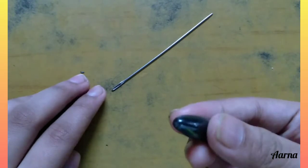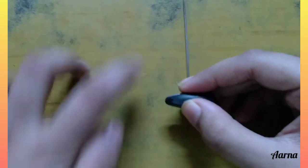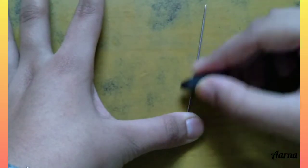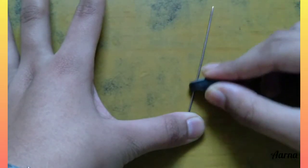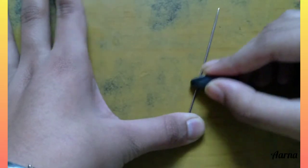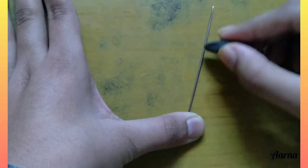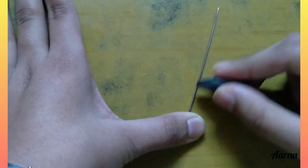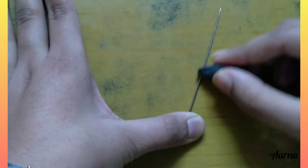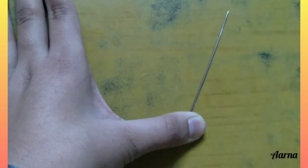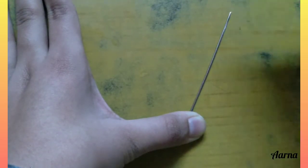Take the north pole of the magnet and move it from one direction to another. I will move it at least 70 to 80 times till the needle is magnetized. We need to rub it against the magnet.